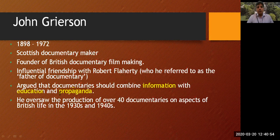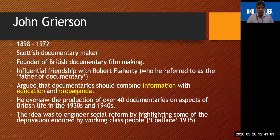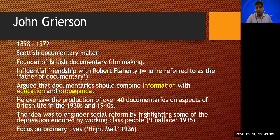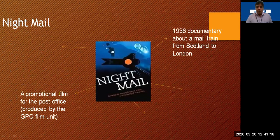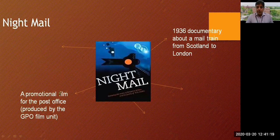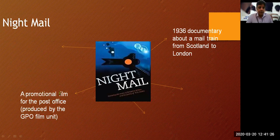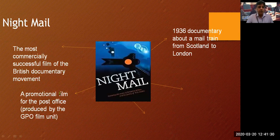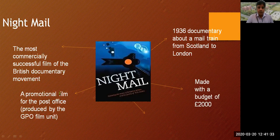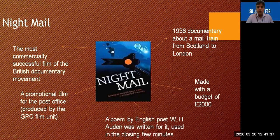Grierson oversaw the production of over 40 documentaries on aspects of British life in the 1930s and 1940s. The idea was to engineer social reforms by highlighting deprivation endured by the working class. A key example is Night Mail, a 1936 documentary about the mail train from Scotland to London — a promotional film for the Post Office produced by the GPO Film Unit, made with a budget of 2,000 British pounds. A poem by English poet W.H. Auden was written for it, used in the closing few minutes.